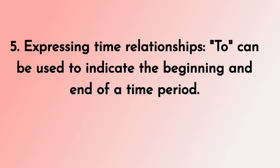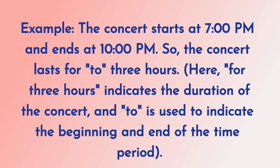5. Expressing time relationships. 'To' can be used to indicate the beginning and end of a time period. Example: The concert starts at 7 pm, and the concerts last for 2-3 hours. Here, 'for 3 hours' indicates the duration of the concert, and 'to' is used to indicate the beginning and end of a time period.